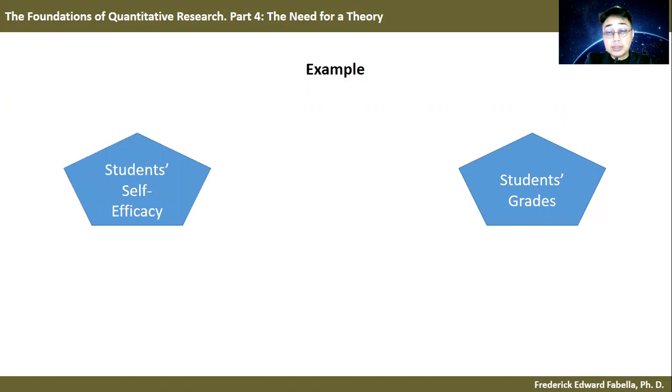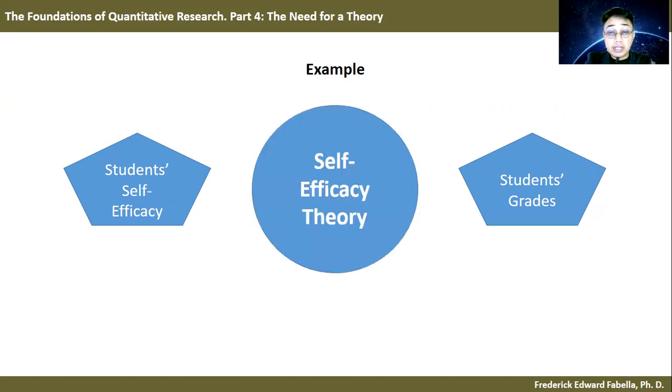And if we are going to link these two variables—students' self-efficacy and students' grades—we will need a theory, and the most appropriate theory we can use is the self-efficacy theory. This self-efficacy theory will link our two variables and offer an explanation as to why students' grades are affected by the student's sense of self-efficacy.